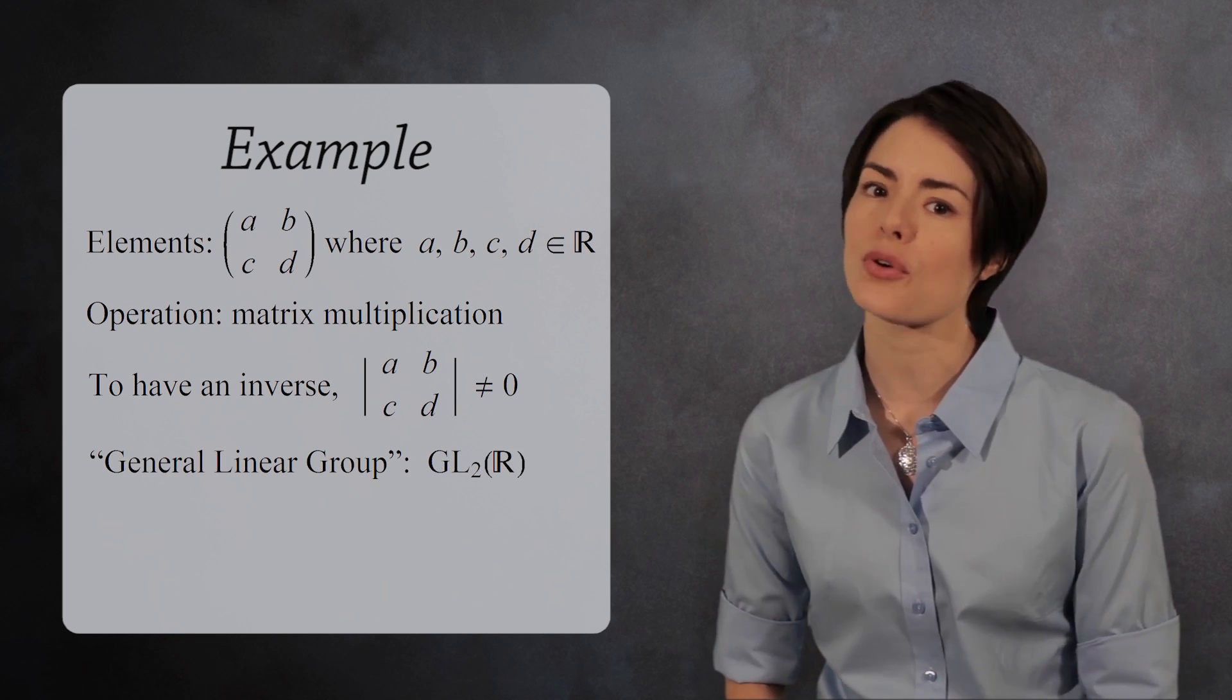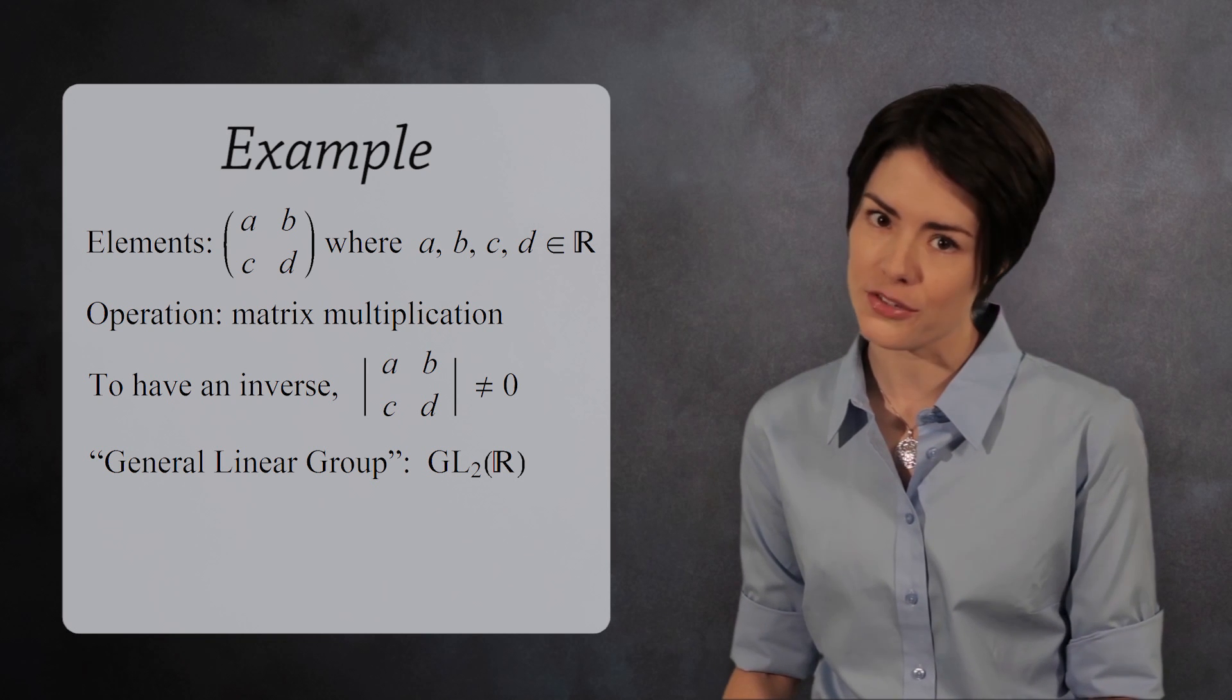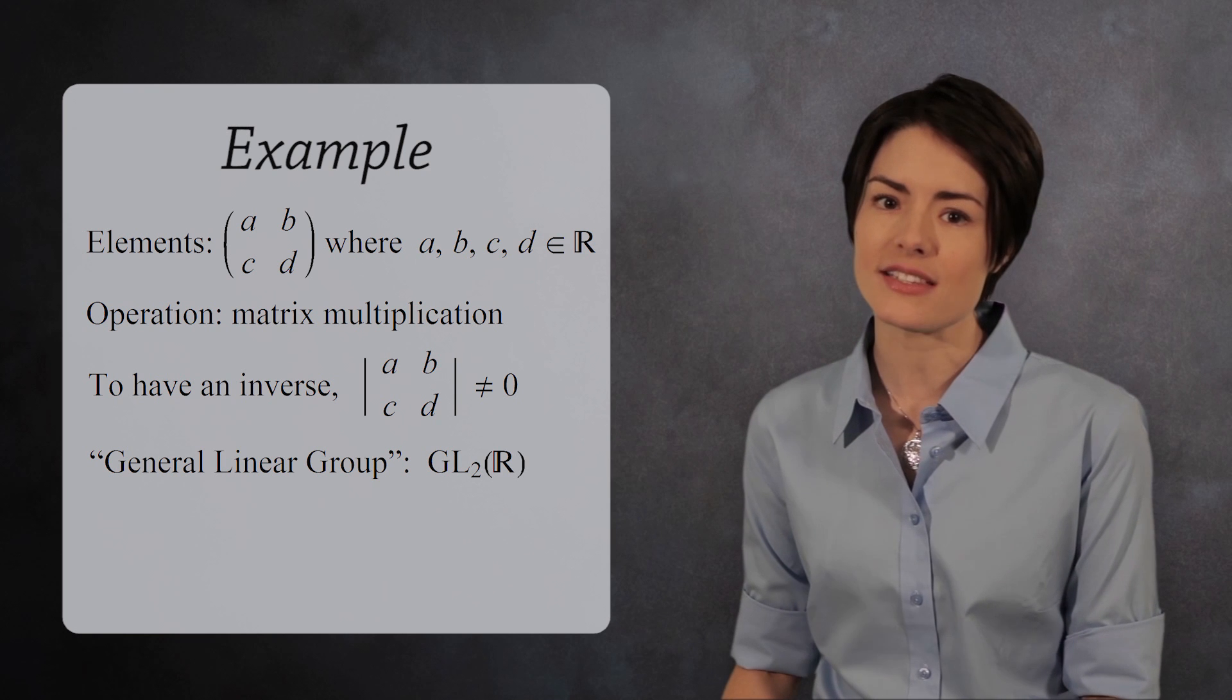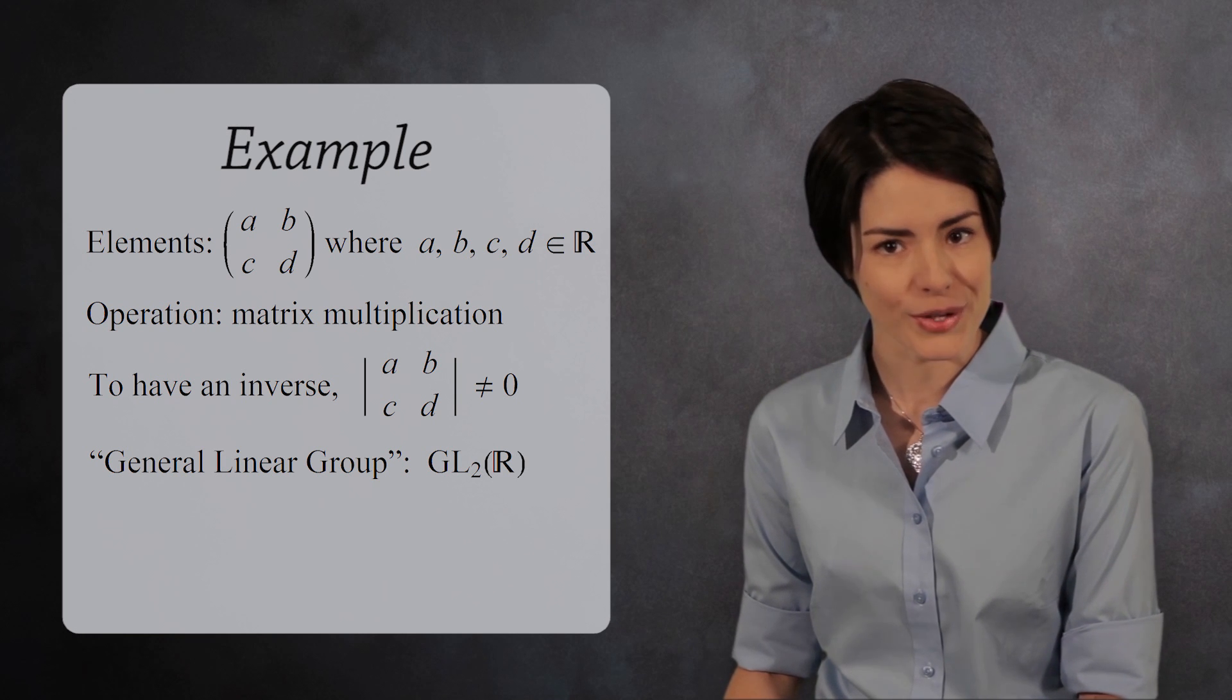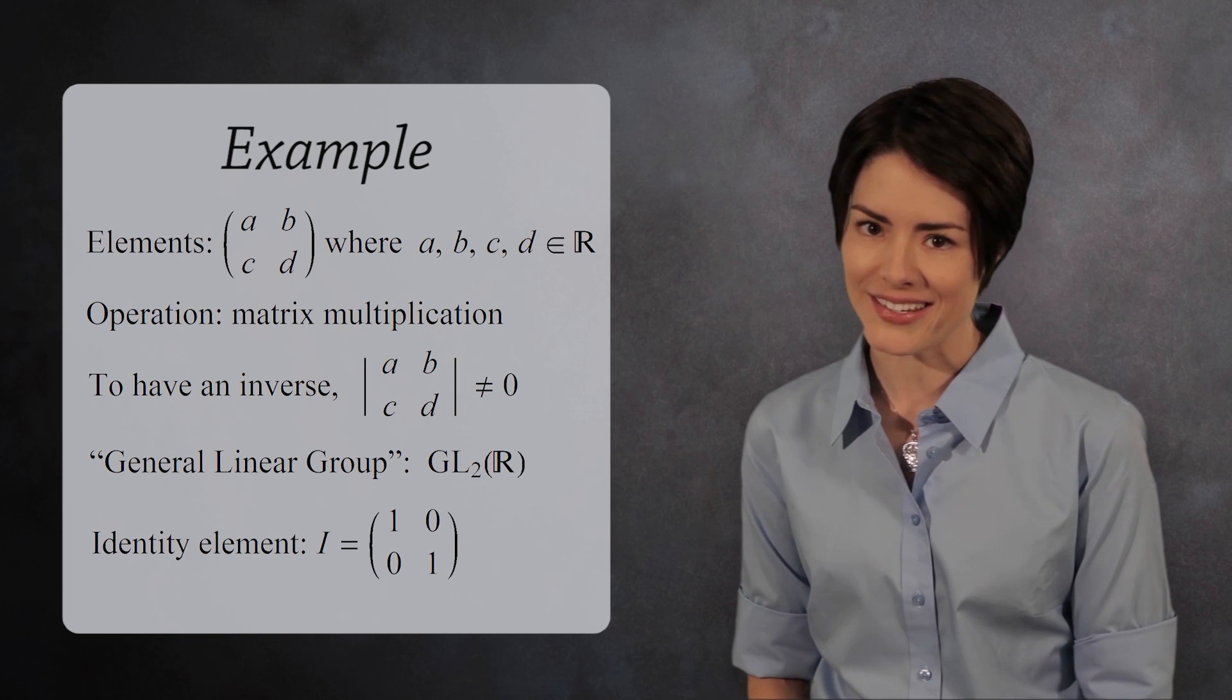The gl is short for general linear. The 2 tells us the matrices are 2 by 2 matrices. And the r lets us know the numbers in the matrix are real numbers. The identity element in this group is the 2 by 2 identity matrix.